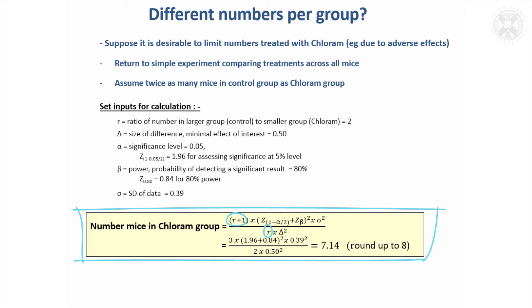where we were trying to get a difference of 0.5 in red blood cell count, we come out with needing that the number of mice in the smaller group, here the chloram group, is going to be 7.14, and we would round that up to be 8. So we need 8 mice in the chloram group, so that's a bit smaller than we had before. We had 10 mice before.